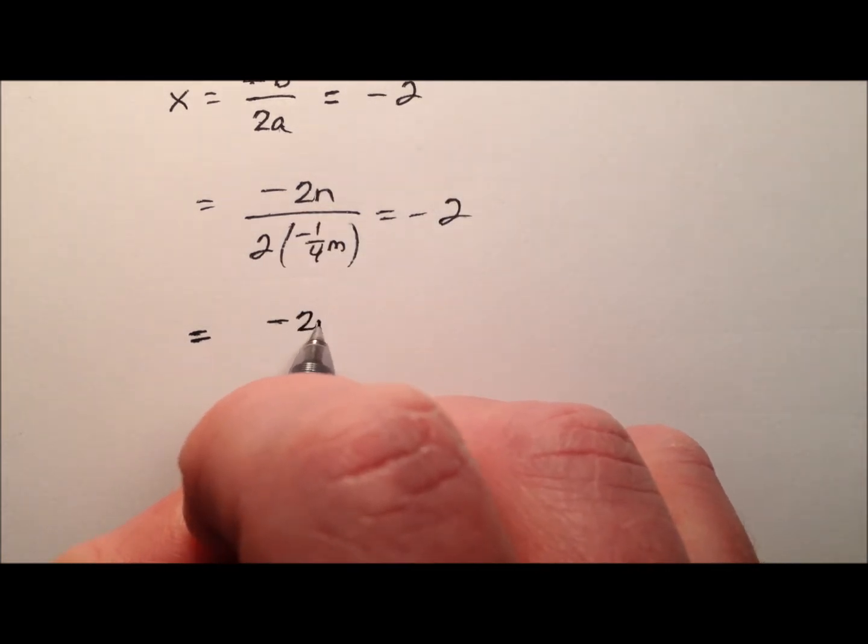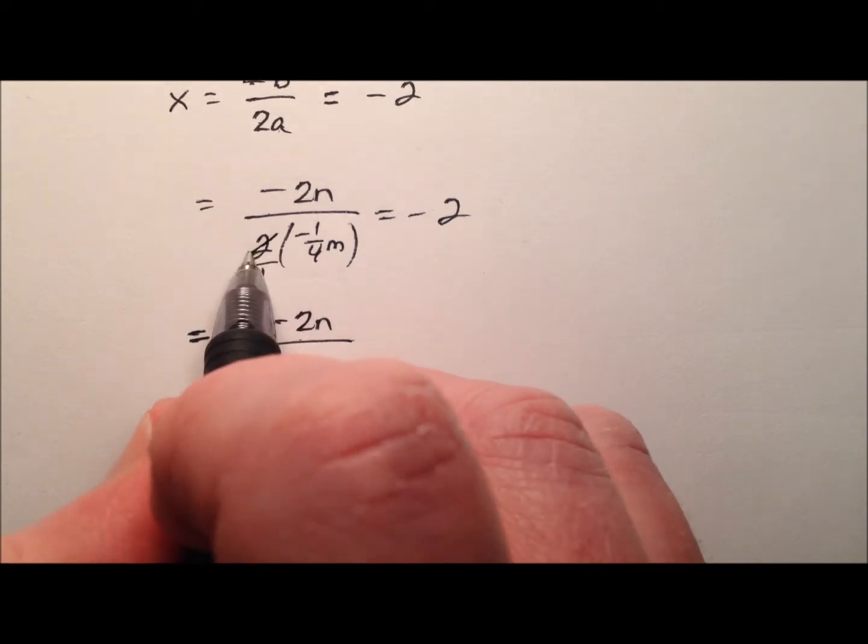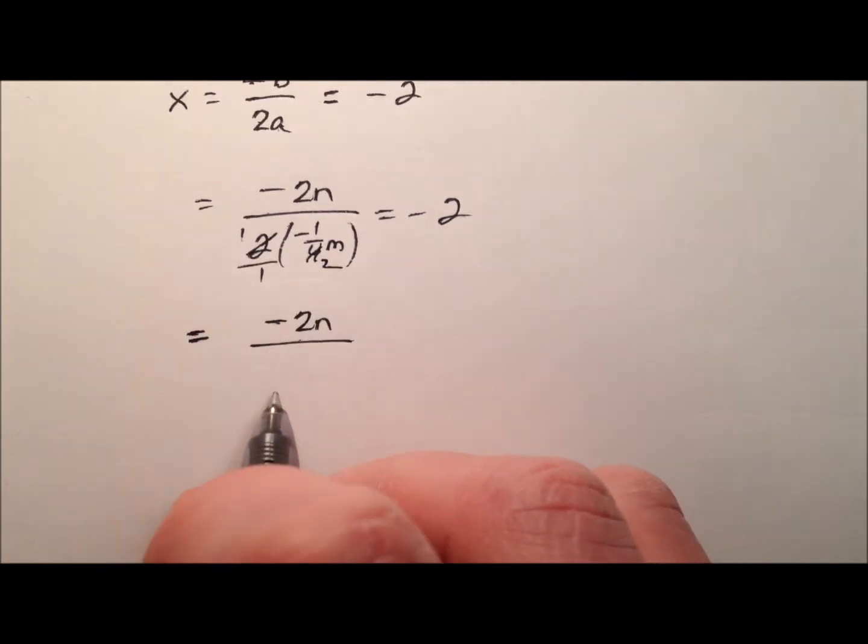Let's clean this up a little bit. So, we have negative 2n in the numerator. The denominator looks like, well, put that 2 over 1. It looks like that guy will cancel with that guy. We've got a little negative 1 half m down there equals negative 2.